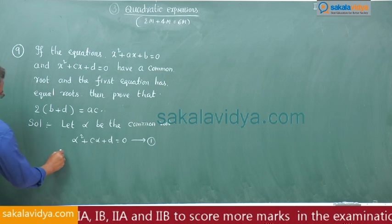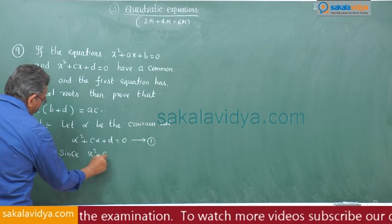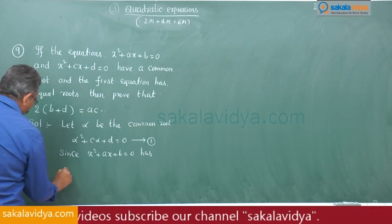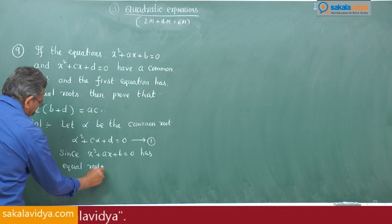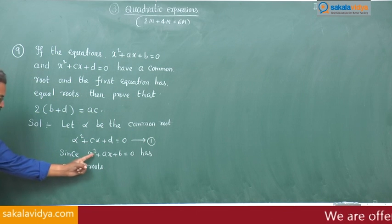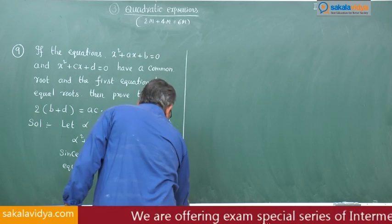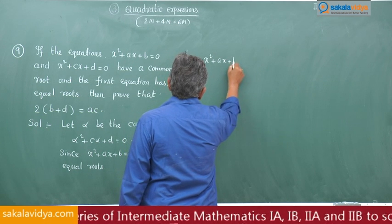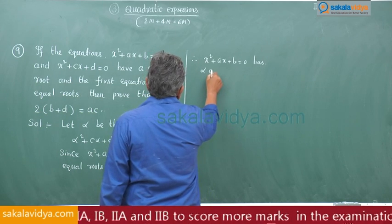Since x square plus Ax plus B is equal to 0 has equal roots, equal roots means alpha is the common root, both the roots will be alpha and alpha. So therefore, x square plus Ax plus B is equal to 0 has alpha and alpha.